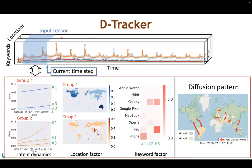This is the modeling results of D-Tracker. It takes only the most recent part of the tensor stream as input tensor and decomposes the input tensor into latent dynamics, the location factor and the keyword factor, which enables us to interpret the results.